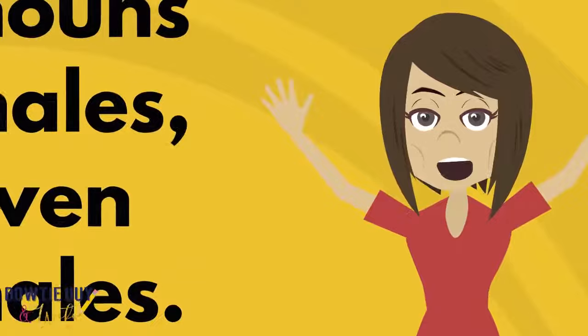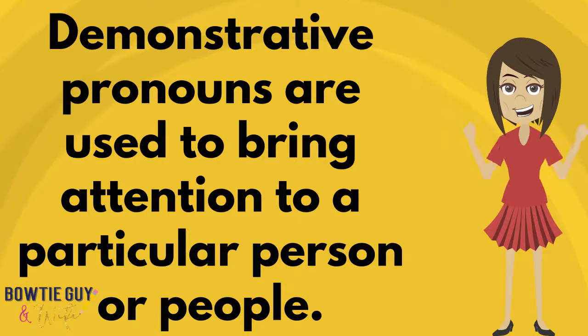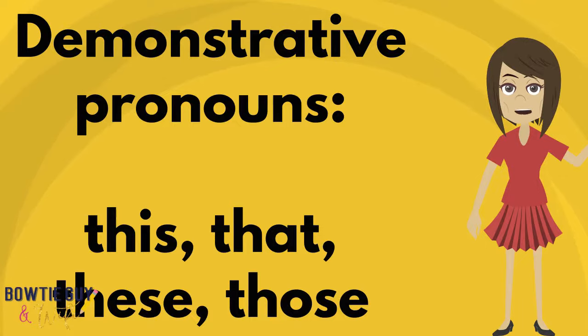Indefinite pronouns do not indicate the gender of a person. They are words like everybody, anybody, either, neither, each, any. Demonstrative pronouns are used to bring attention to a particular person or people. Some examples of demonstrative pronouns are this, that, these, those.